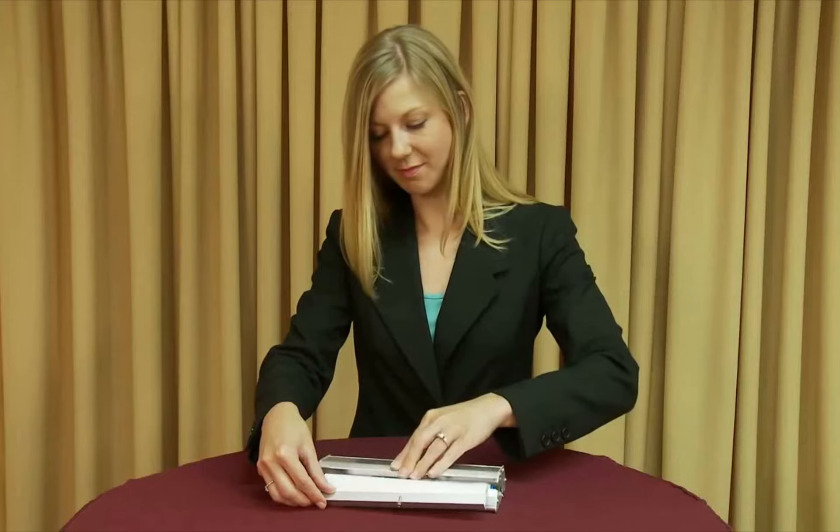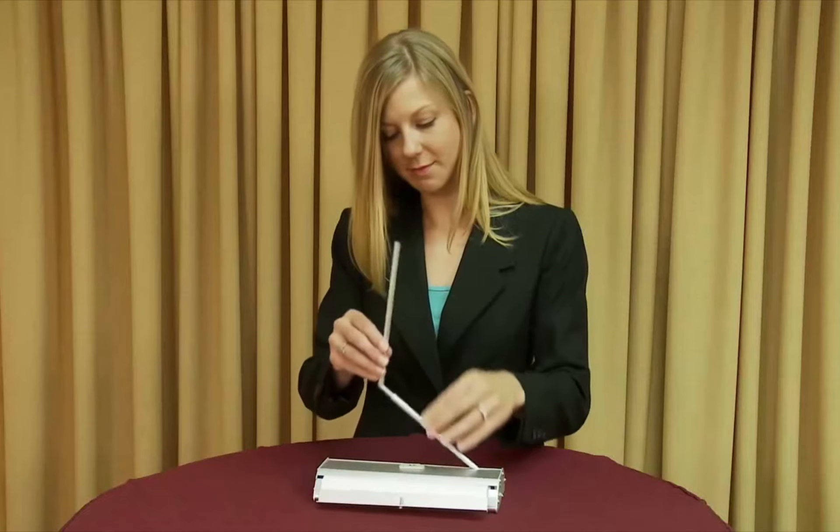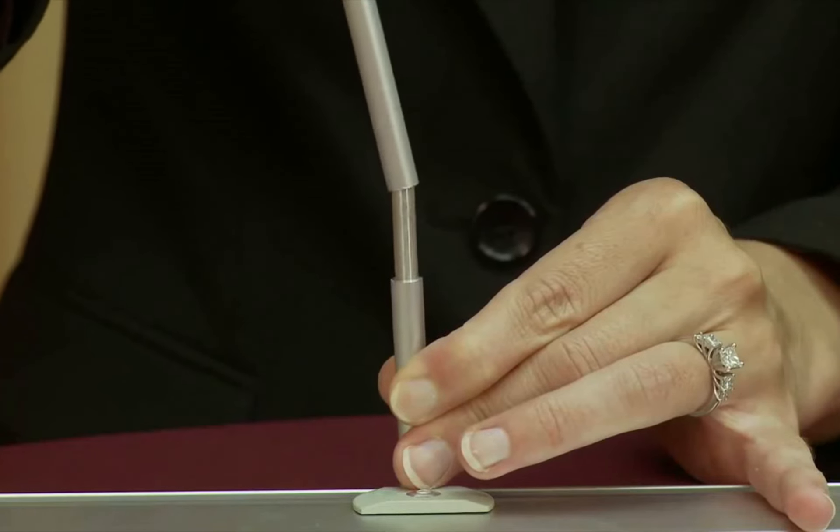Next, rotate the fastener located on the base unit 45 degrees to release the shock cord pole. Assemble the shock cord pole and rotate it until it is upright.